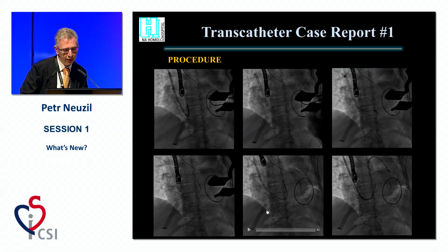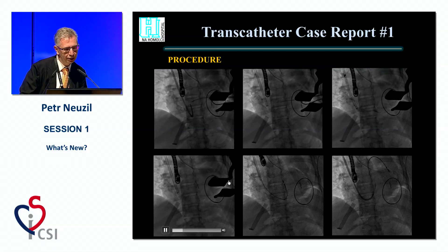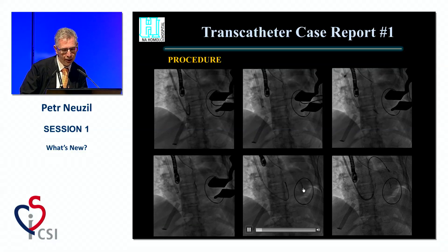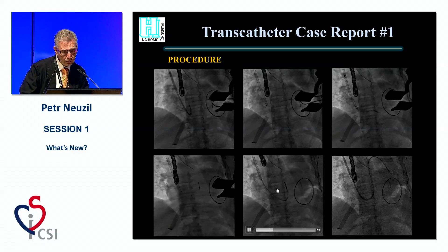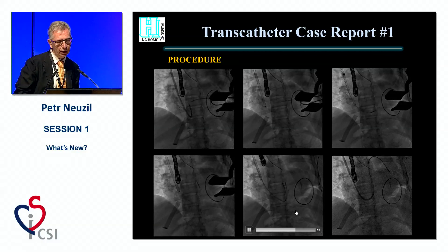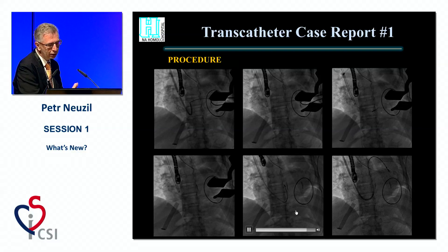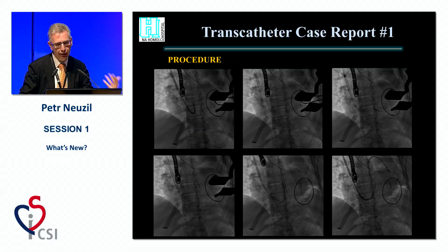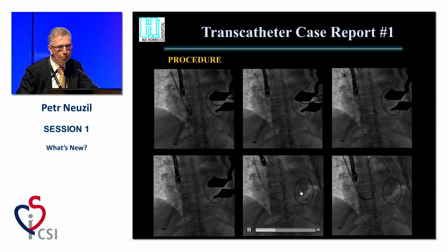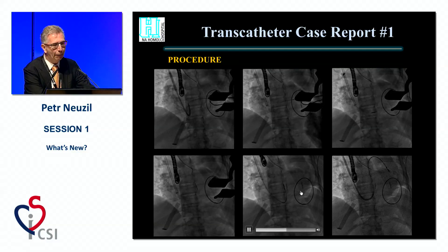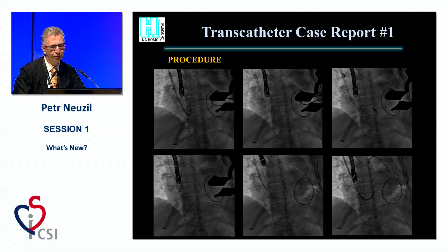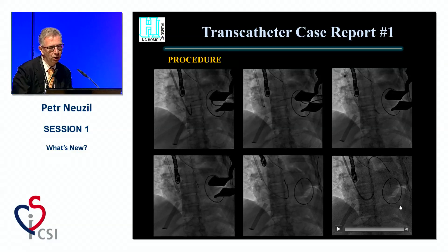After that, we place the first internal anchor through the center — the system is based on the wire running from the jugular to outside. Here is the placement of the external anchor — it's visible here, already done. Then we proceed to the second anchor. Whenever you have good anatomy based on MRI, we can place two to three internal anchors, then a transapical final anchor to close the entire cavity.